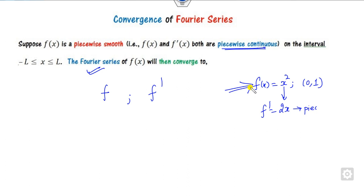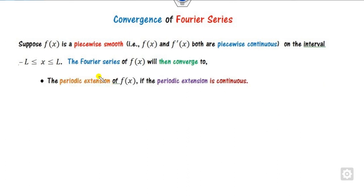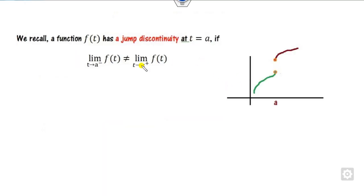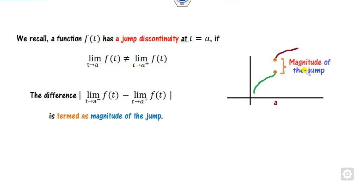Once it converges, the series converges to the expansion you have written whenever the function is continuous. When the function is discontinuous, the series converges to the average of the lower limit and the upper limit — this is called jump discontinuity. Jump discontinuity occurs whenever the left-hand limit and the right-hand limit are not the same, and the gap between them is called the magnitude of the jump.